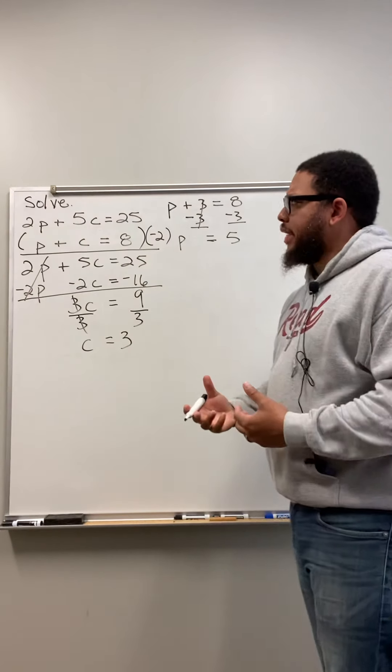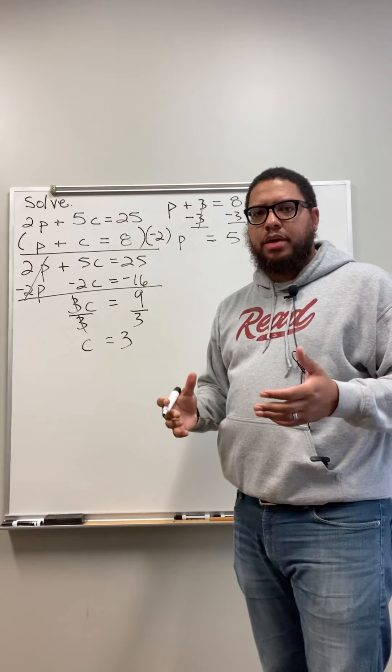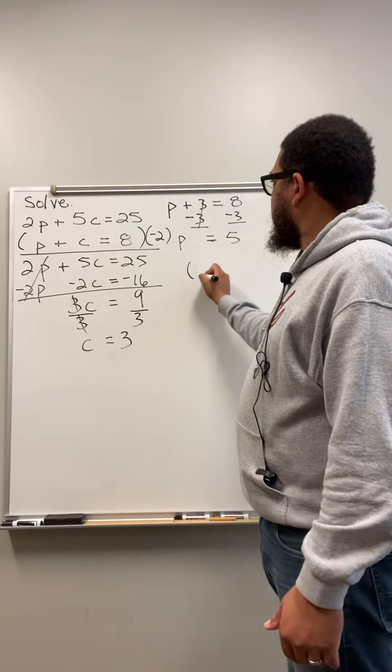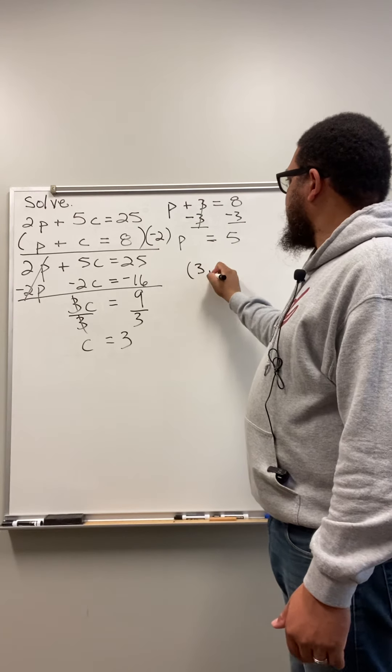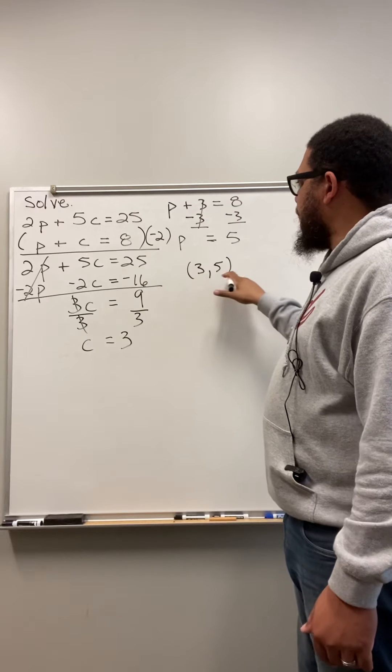Now, when we write our answer, we write it like a coordinate pair, or ordered pair. Like a point on a graph. And usually we have our variables in alphabetical order. So we would have 3 comma 5 because C comes before P in the alphabet.